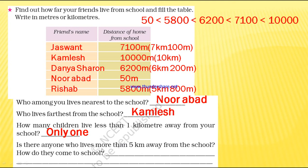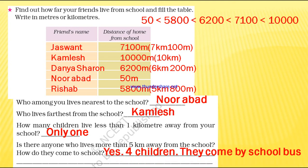Is there anyone who lives more than 5 kilometers away from the school? How many children are more than 5 kilometers? Risha is 5 kilometers 800 meters — that is more than 5 km. Daniel Sharon is 6 km 200 m, Kamlesh is 10 km, and Jaswant is 7 km 100 m. So all four of these children's distances are more than 5 kilometers. These four children come by school bus.